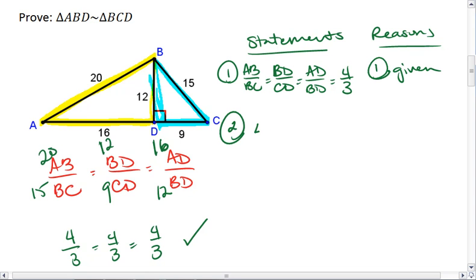Then, we know that triangle ABD is similar to triangle BCD, and this is by side, side, side triangle similarity. And that's it. It's only a two-step proof.